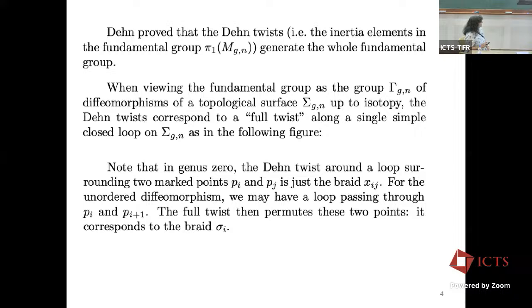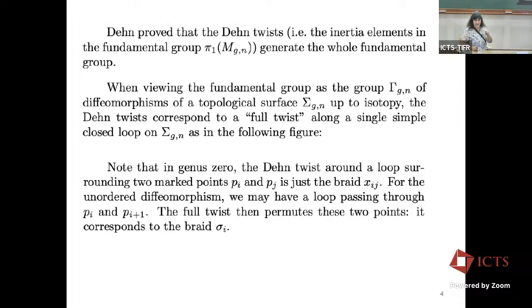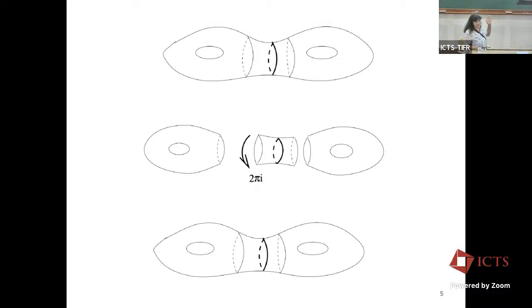When you have marked points in your space, generally the loop doesn't touch the marked points but goes between them. Because we're looking at the moduli spaces M_{g,n} where the points are ordered and diffeomorphisms don't permute them. But if you want to look at the moduli space where the points are unordered — the quotient by the permutation group — then you can allow your simple closed loops to pass through the points. So in genus zero with points one and two, you take a loop passing through both, and the diffeomorphism permutes those two points. Those diffeomorphisms generate the full mapping class group of unordered points.